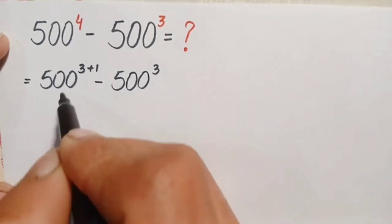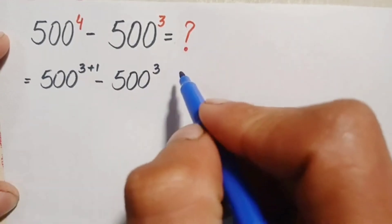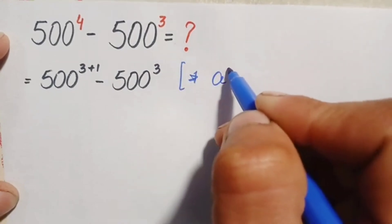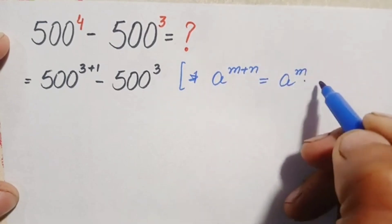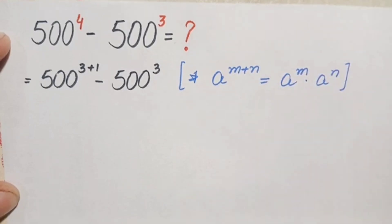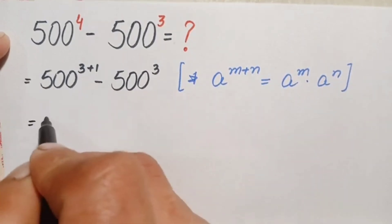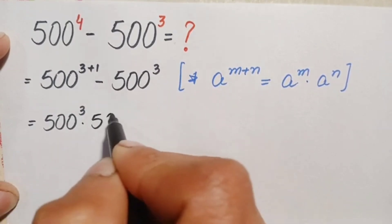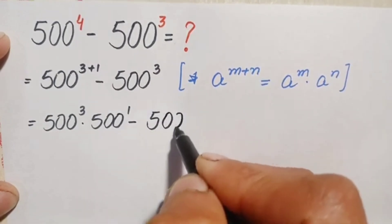In this first number we will use the exponential identity: a raised to the power m plus n, which can also be written as a raised to power m times a raised to power n. Using this exponential identity, we split the exponent 3 and 1 over 500, so this becomes 500 raised to power 3 times 500 raised to power 1, minus 500 raised to power 3.